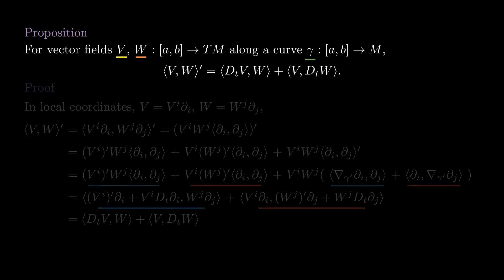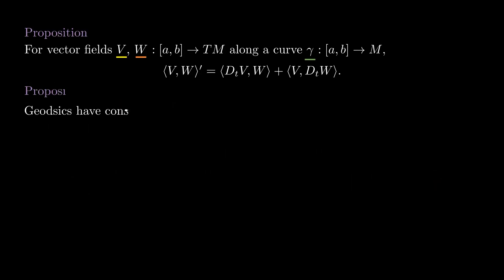Now we are ready to show that geodesics always have constant speed. To see that, we just take the derivative of the speed squared and apply the Leibniz rule. By definition of geodesic, the covariant derivative we get here is zero.